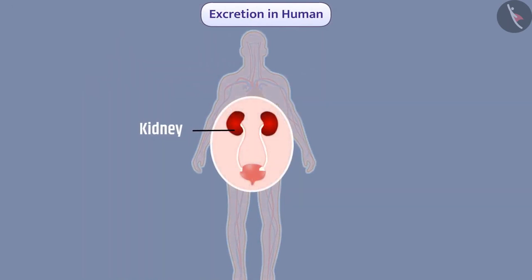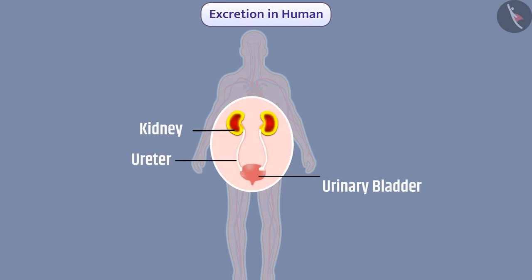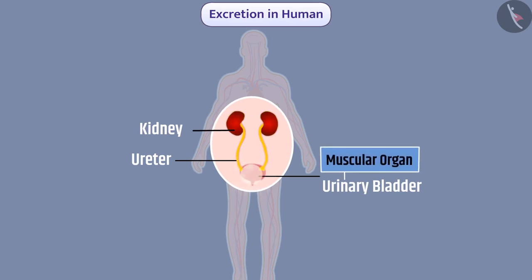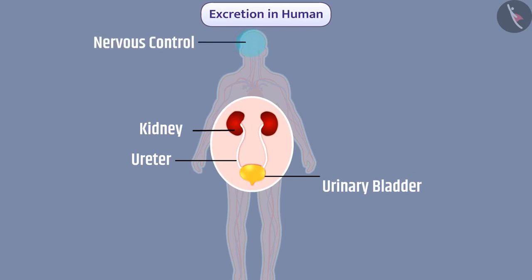Each kidney is connected to the bladder by a long tube called a ureter, which carries urine from the kidney to the bladder. The bladder is a muscular organ in which urine is stored, and the urinary bladder is under nervous control. Therefore the release of urine from the body is under human control. When the bladder expands, urine is carried out of the body by the urethra due to the pressure of the expanded bladder.